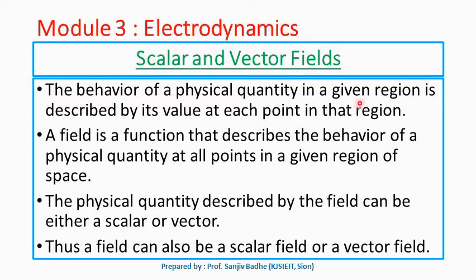The behavior of a physical quantity in a given region is described by its value at each point in that region. We can define a field as a function that describes the behavior of physical quantity at all points in a given region of space. So a physical quantity can be described by a field, and that field can be either scalar or vector. Based on the value that the function representing a field is returning, it can be called a scalar field or vector field.